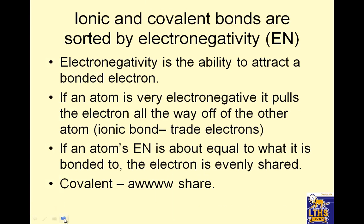Ionic and covalent bonds are sorted by electronegativity. You'll get an electronegativity periodic table. Electronegativity is the ability to attract a bonded electron. If an atom is very electronegative, it pulls the electron all the way off the other atom - ionic bond, trade electrons. If an atom's EN is about equal to what it is bonded to, the electrons are evenly shared - that's covalent.